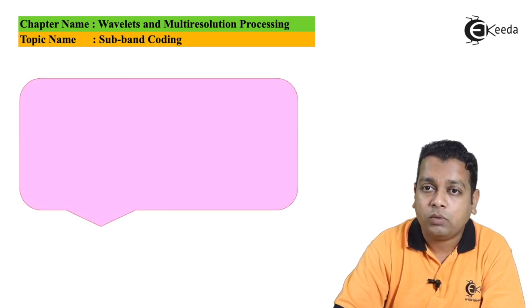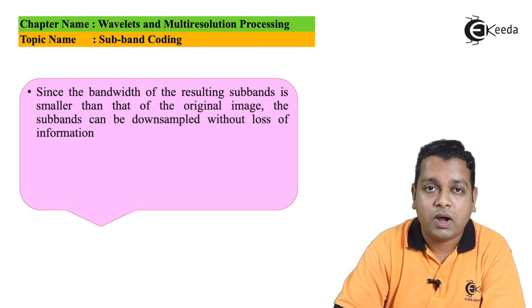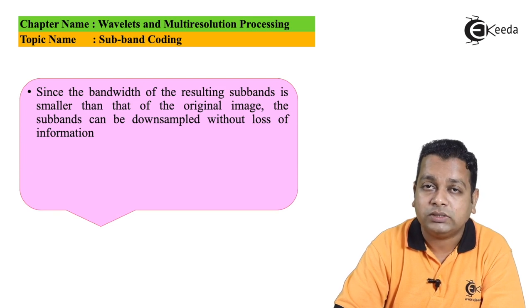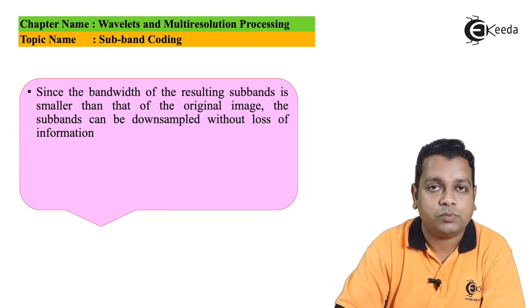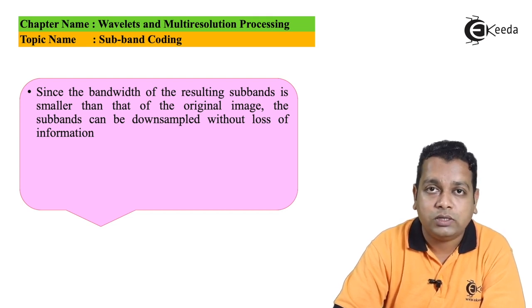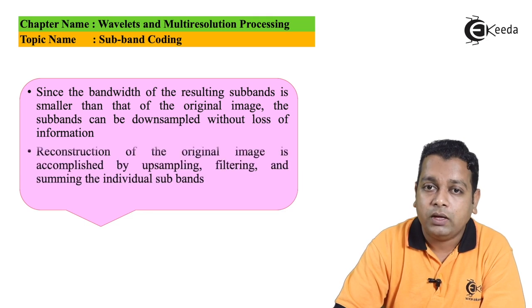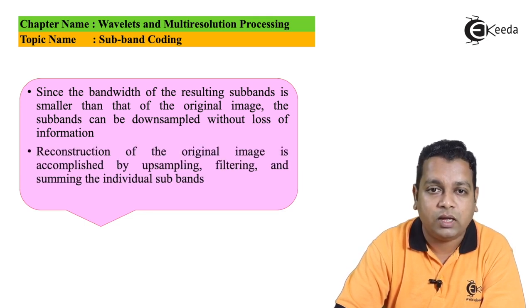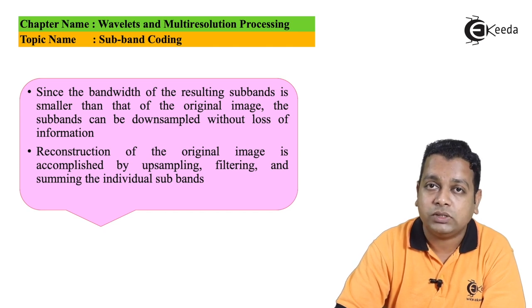Since the bandwidth of the resulting subbands is smaller than that of the original image, the subbands can be down-sampled without loss of information. Down-sampling is a part of multi-resolution signal processing used here. Reconstruction of the original image is accomplished by up-sampling, filtering, followed by summing the individual subbands.